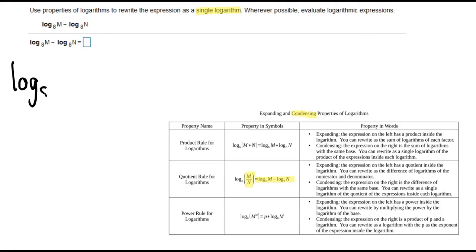For our example, when we condense, we're going to have log base 8. Notice both of our logs have log base 8 - you can only condense if they have the same log base. And then we're going to condense using division because of the subtraction.